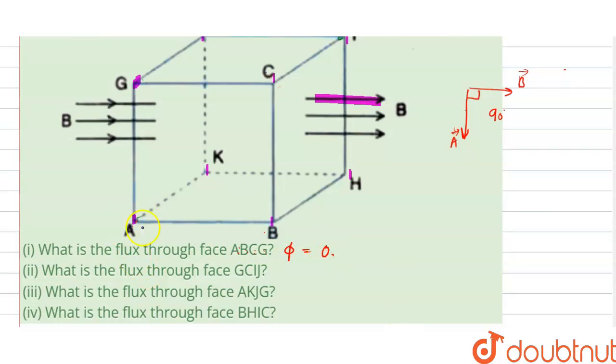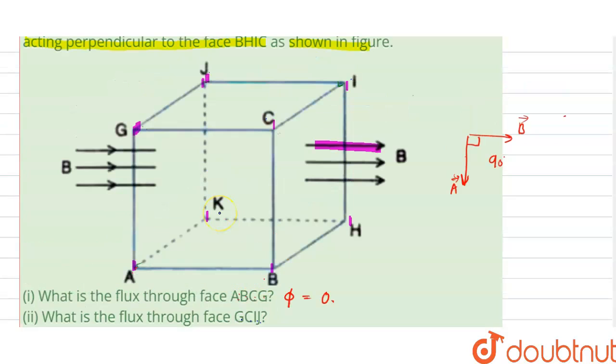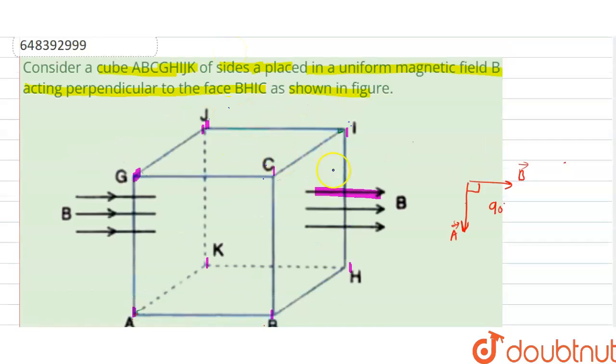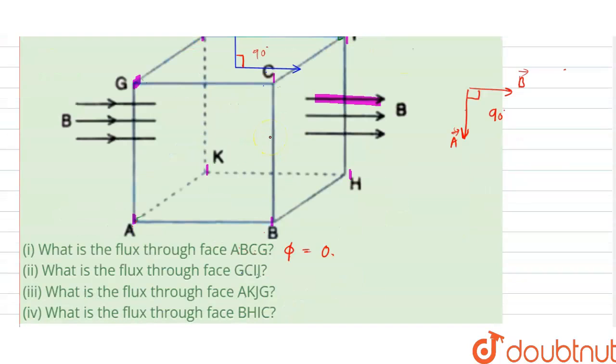Now for the next one that is given GCIJ. Let me first figure out which is the surface area. This is the topmost surface area. For this surface the area vector is upward to this plane and magnetic field direction is in this direction. So these are also making an angle of 90 degrees. Similarly for this case, this phi will also be 0.